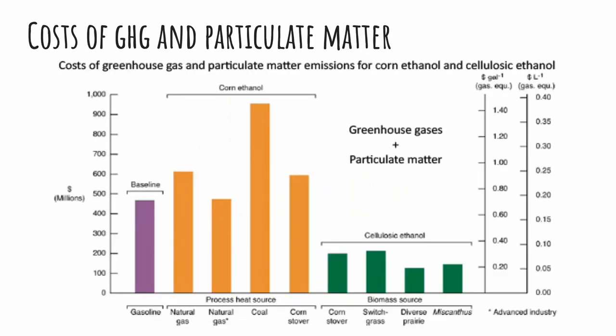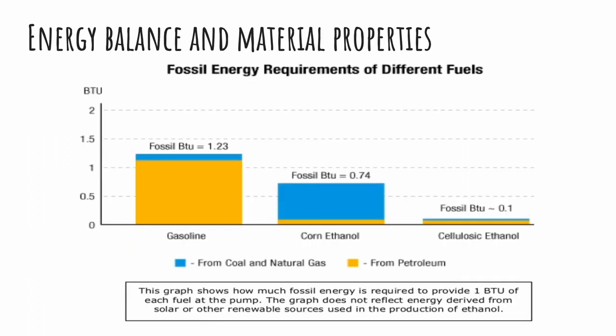Here on this slide, we can see the costs of the greenhouse gas and particulate matter. You can see that for corn ethanol, the costs are way higher than for cellulosic ethanol. On the next slide, we can see the energy balance and material properties. Ethanol is a highly flammable alcohol with a chemical formula C2H5OH. The colorless liquid has a density of 789 kilograms per meter cubed and a low boiling point of around 80 degrees Celsius. Ethanol is primarily used in gasoline blended at 10% ethanol, to oxygenate the fuel and improve combustion in the engine, reducing particulates in vehicle emissions and air pollution.